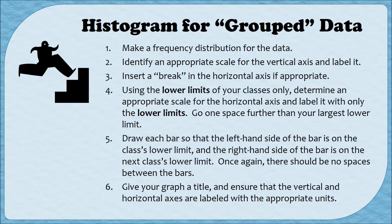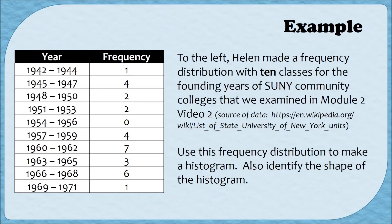Step six is the same as before: make sure the graph has a title so we know what information we're looking at, and that the vertical and horizontal axes are labeled appropriately with correct units. Now let's make a histogram for grouped data. Our colleague Helen has made a frequency distribution with 10 classes for the founding years of SUNY Community Colleges. We looked at this data in Video 2, but our distribution only had six classes, so Helen's is a little different. We'll use Helen's distribution to make a histogram and identify the shape.